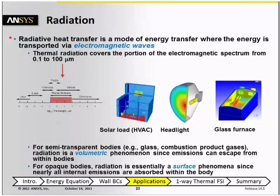Radiative heat transfer is a mode of energy transfer where the energy is transported via electromagnetic waves, and thermal radiation covers a portion of the electromagnetic spectrum from about 0.1 to 100 microns.